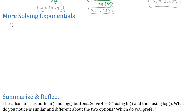Let's take a look at problems like 3 to the 5x equals 7. We found out in our previous video if the variable's in the exponent and we can't get the same base on both sides, we can take a log of both sides. So I'm going to take a log base 10 of both sides — that's going to grab the exponent and move it out front.